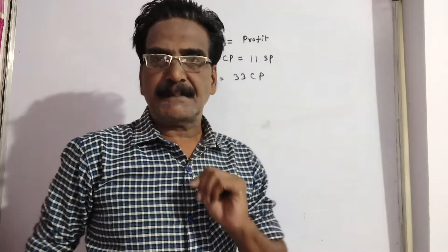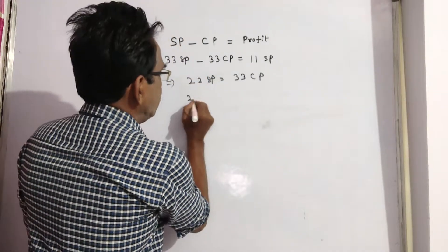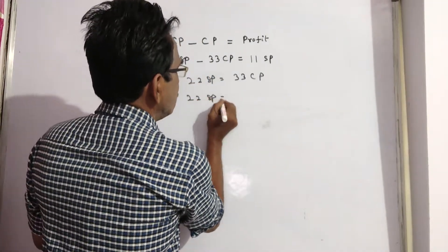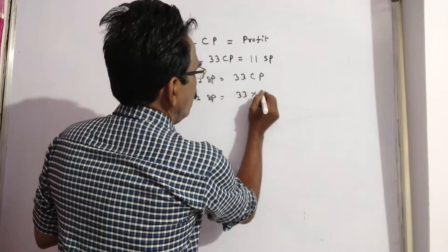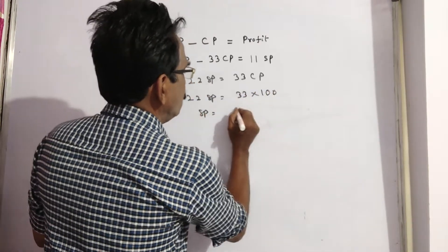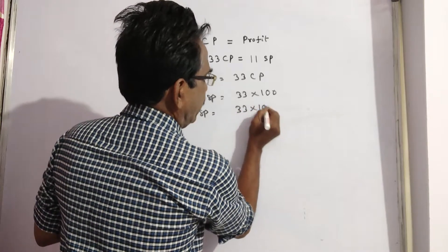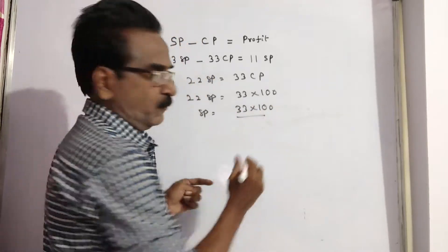After arriving at this step, assume cost price is 100. So 22 SP is equal to 33 into 100. Now SP is equal to 33 into 100 by 22.